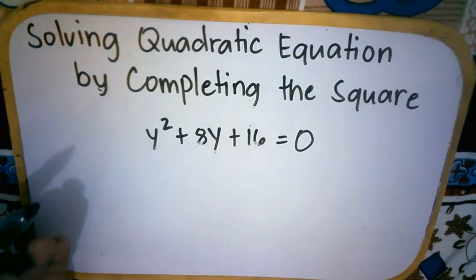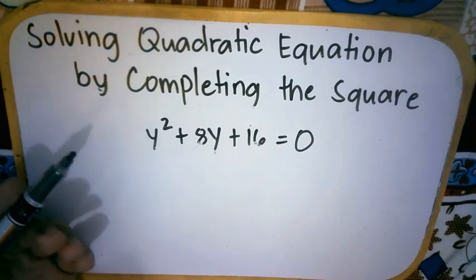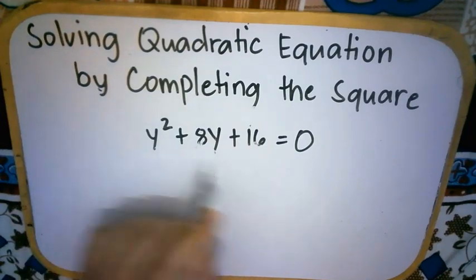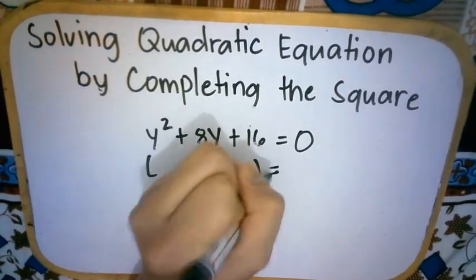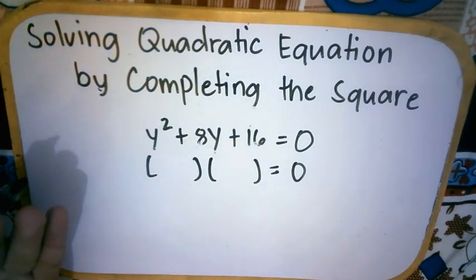Gaya ng binanggit ko kanina, ito ay perfect square trinomial. Ngayon, let's try to prove na ito nga ay perfect square trinomial by getting its factors. So, ito ay can be factored. We have 2 quantities. Kung naalala nyo pa, yung step on how to factor trinomials.